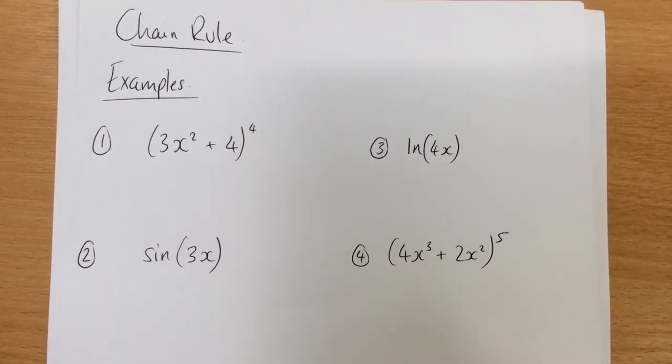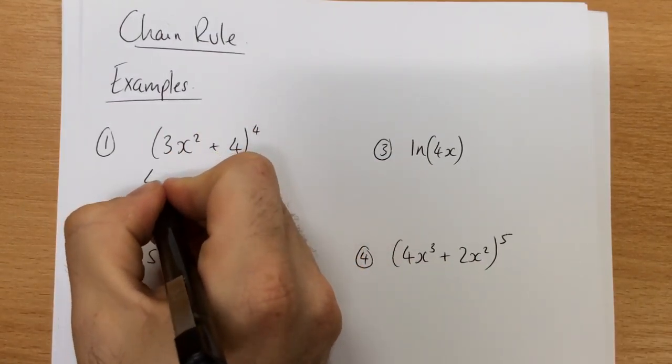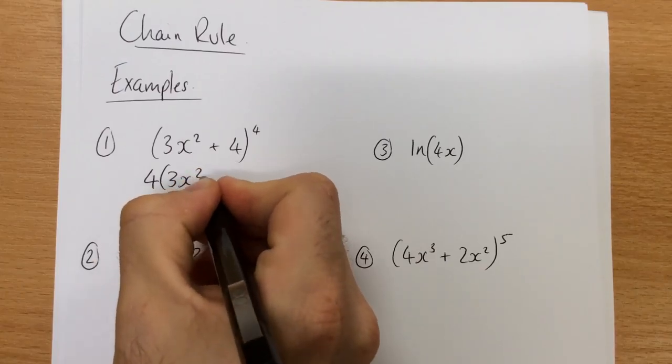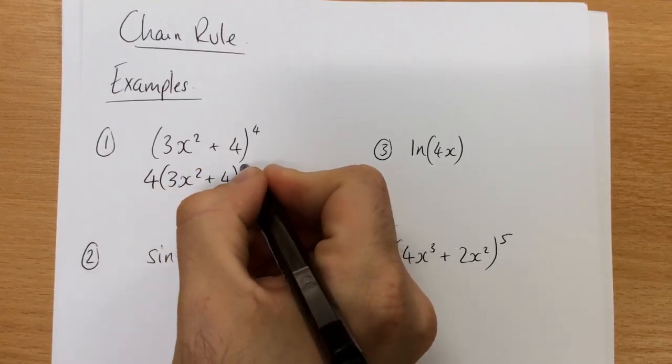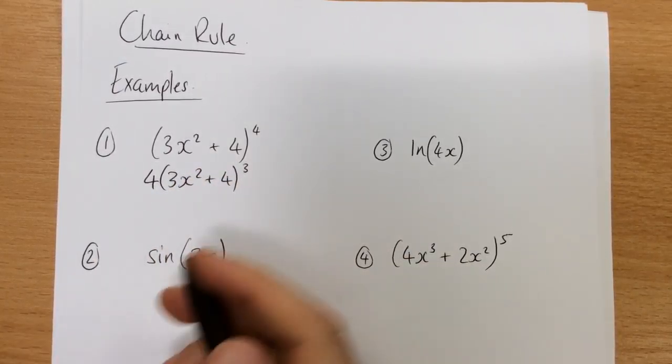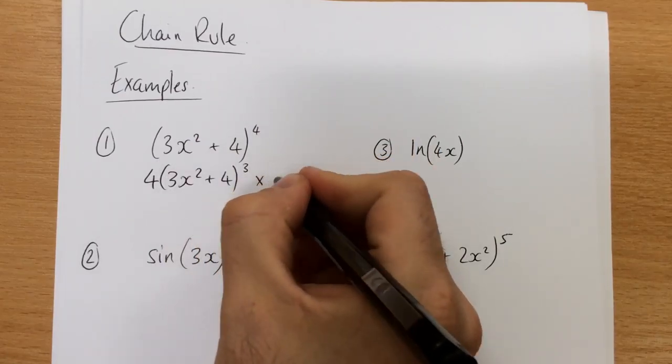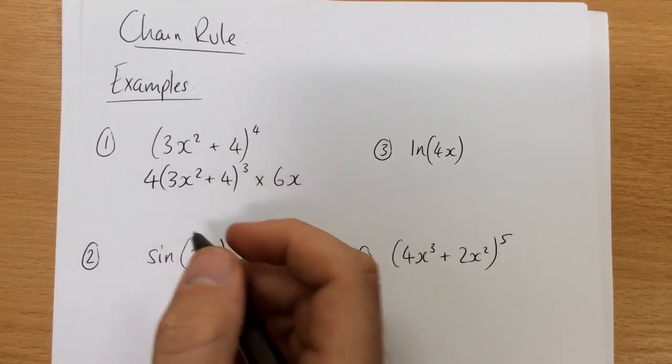So, chain rule, we just differentiate it as normal, bring the 4 down, the bracket becomes in effect our x and take one away from the power, but we then have to times by the differential of this bracket, which will obviously be 6x in this case.